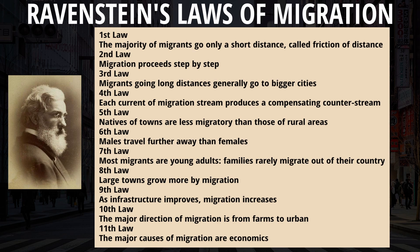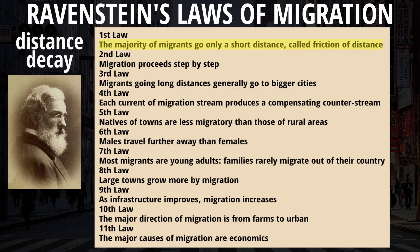Another theory you should be familiar with in this unit is Ravenstein's laws of migration. There are 11 laws, and we'll point out the most important ones that apply to AP Human Geography. The first is that most migrants travel short distances. This relates to the concept of distance decay — that geographic processes such as migration are less likely to occur as cities get further apart, and more likely if the distance is shorter.